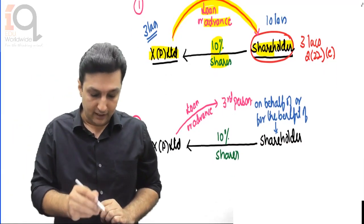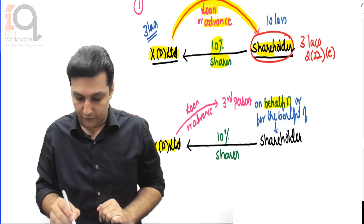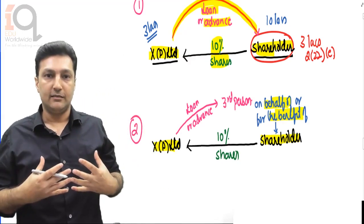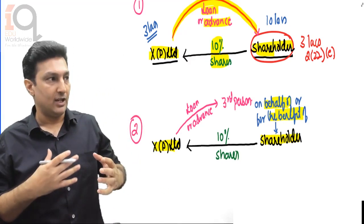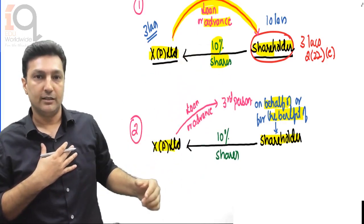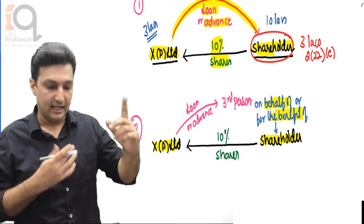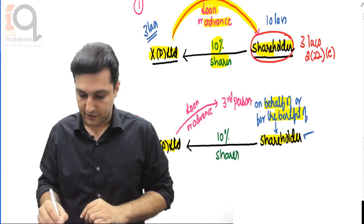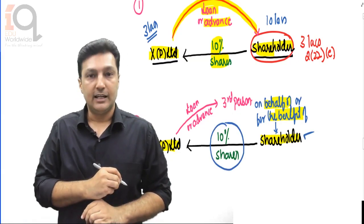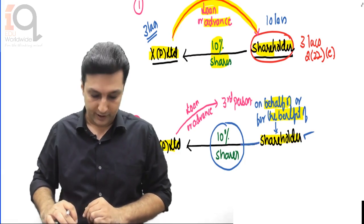Second: where a loan is given by a closely held company on behalf of or for the benefit of the shareholder. For example: I am the managing director, I own 40% shares. On my saying, the company gives Mr. A a loan of 2 to 4 lakhs on my behalf - then in that case it is still deemed dividend in the hands of the shareholder. And for this, the shareholder must have 10% holding - the same rule that we discussed above will apply.